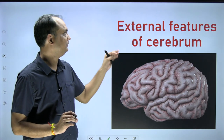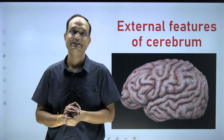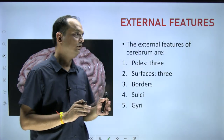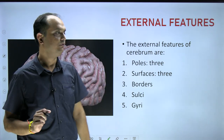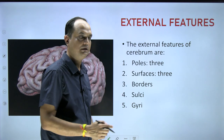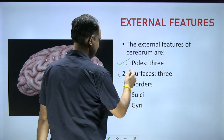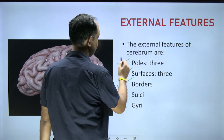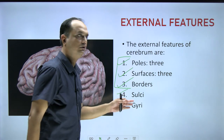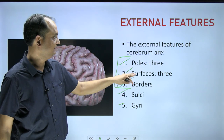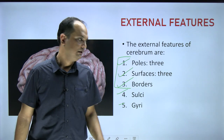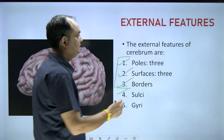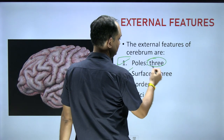Hello students, today we will discuss the external features of the cerebrum. When you have the cerebrum in your hand in the dissection hall, you will observe the following external features: first are the poles of the cerebral cortex, then the surfaces, borders, sulci, and gyri. In today's session we will discuss the first three things — the poles, surfaces, and borders. For sulci and gyri we have a separate session.